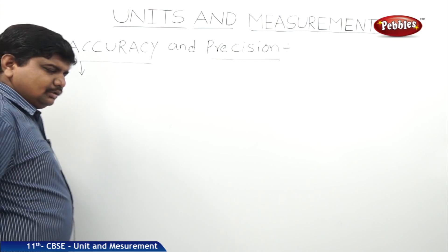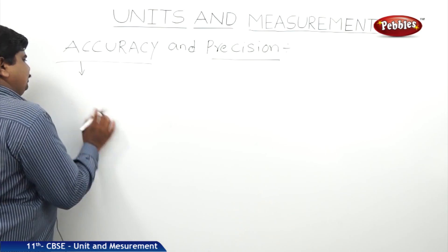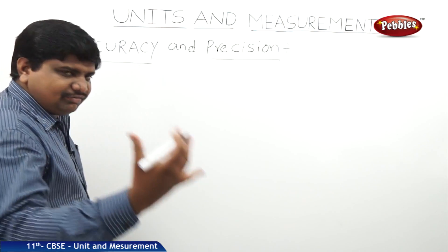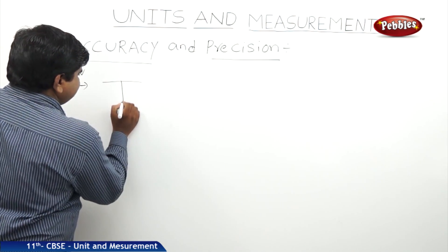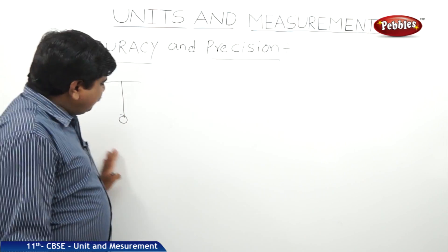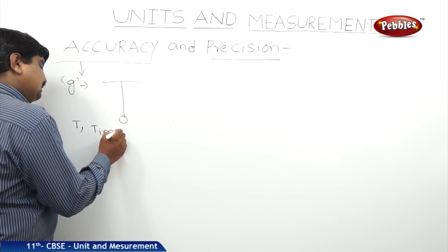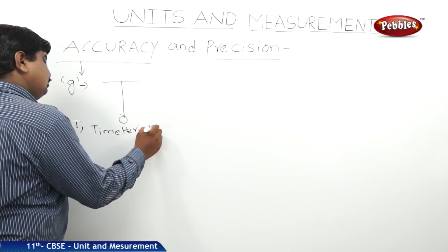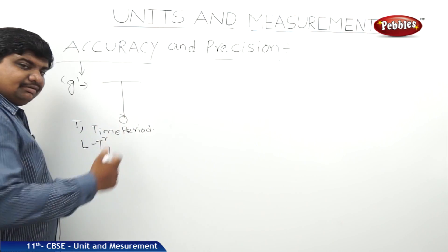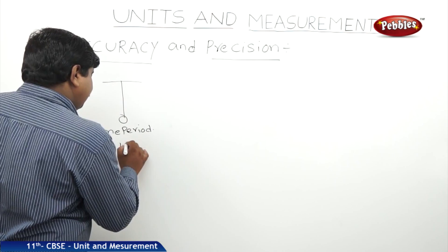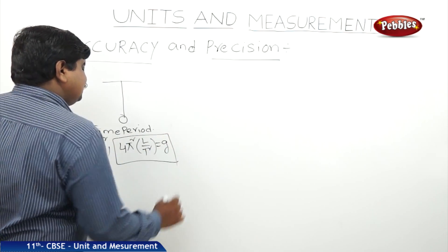What is the meaning of accuracy? Suppose an experiment was done to find g — the acceleration due to gravity. We will use a simple pendulum, calculate the oscillations, and from those oscillations find the time and time period. We plot a graph between the length of the pendulum and the square of the time period, then substitute the L/T² value into the formula 4π²L/T² to get the g value.